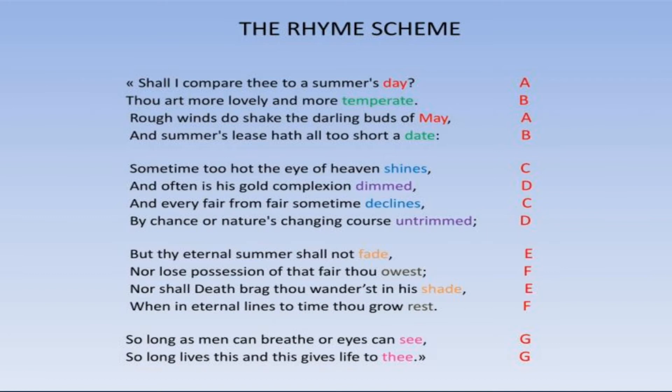The rhyming scheme of the first quatrain is ABAB. The rhyming words are day, May, temperate, and date. In the second quatrain, the rhyming words are shines and declines, dimmed and untrimmed. So the rhyming scheme is CDCD.